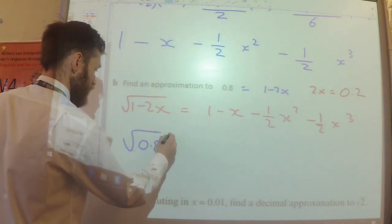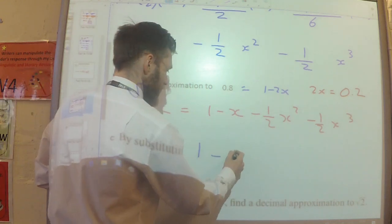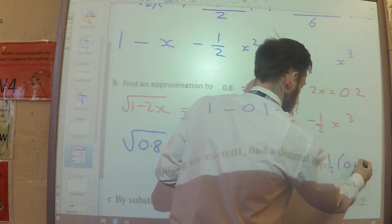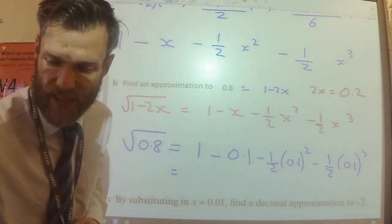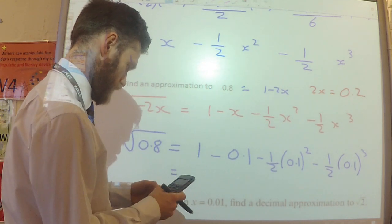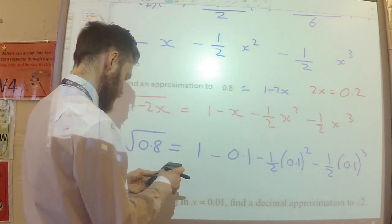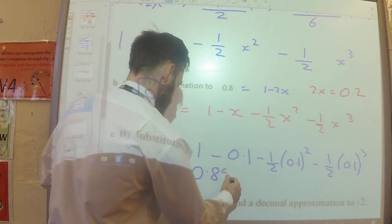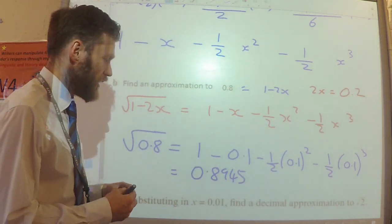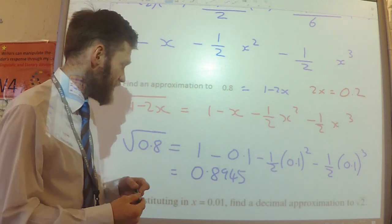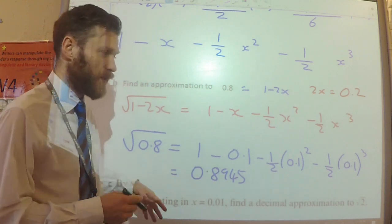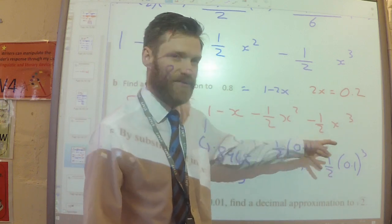So the square root of 0.8 would be equal to 1 minus 0.1 minus 1.5 of 0.1 squared minus 1.5 of 0.1 cubed. Tapping that into my calculator gives 0.8945, which is the approximation for the square root of 0.8. If you type the square root of 0.8 into your calculator, you'll see we're pretty close. We only went up to the cubed term; if we wanted more accuracy, we'd have to include the higher terms.